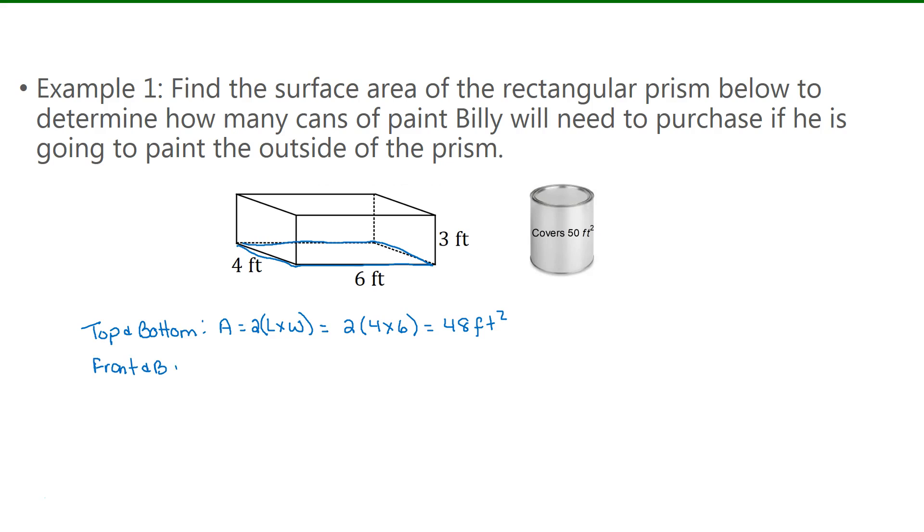Now the front and back, use the same formula. I see that the dimensions of this rectangle here are 6 by 3. So 2 times 6 times 3. 6 times 3 is 18, times that by 2 gives me 36.